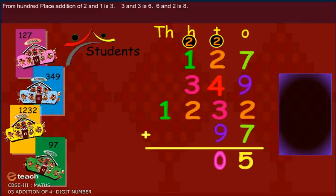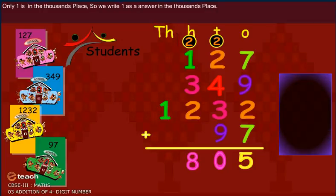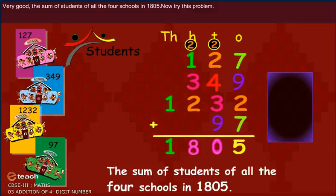Write zero under tens place and carry two on hundreds place. From hundreds place, addition of two and one is three. Three and three is six. Six and two is eight. Write eight under hundreds place in answer. We have no need to carry in this number. Only one is in the thousands place. So, very good. The sum of students of all the four schools is 1805.